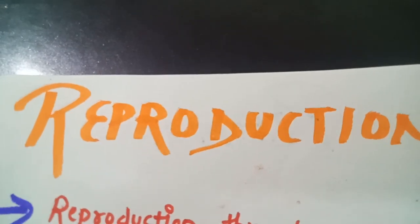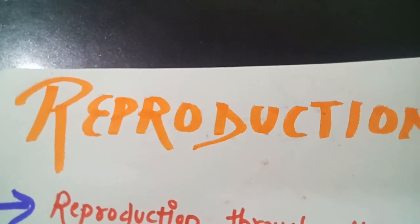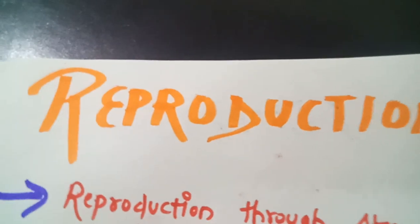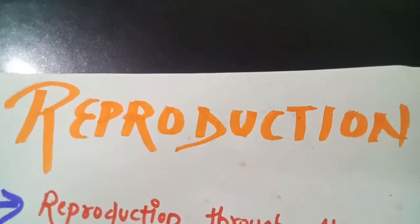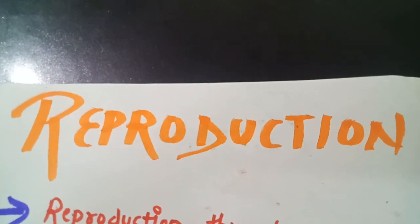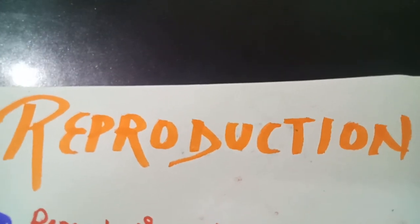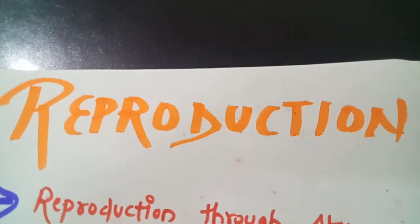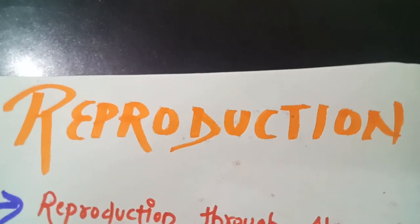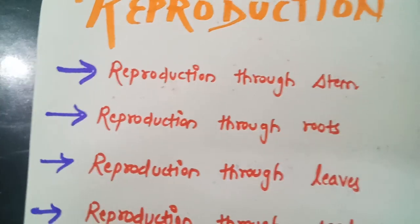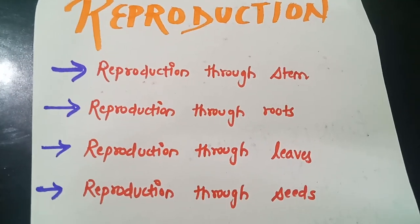The process by which living organisms produce new organisms of their own kind. It means if a plant will reproduce, the plant will reproduce a baby plant and humans will reproduce a baby human and animals will reproduce a baby animal of their own kind. Plants reproduce through various processes.